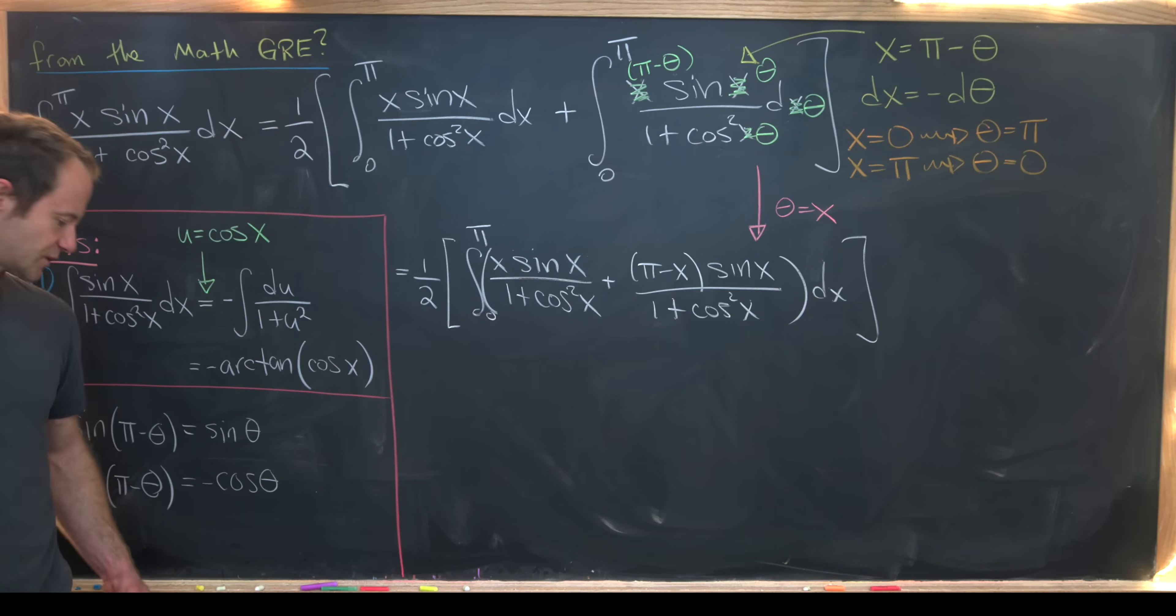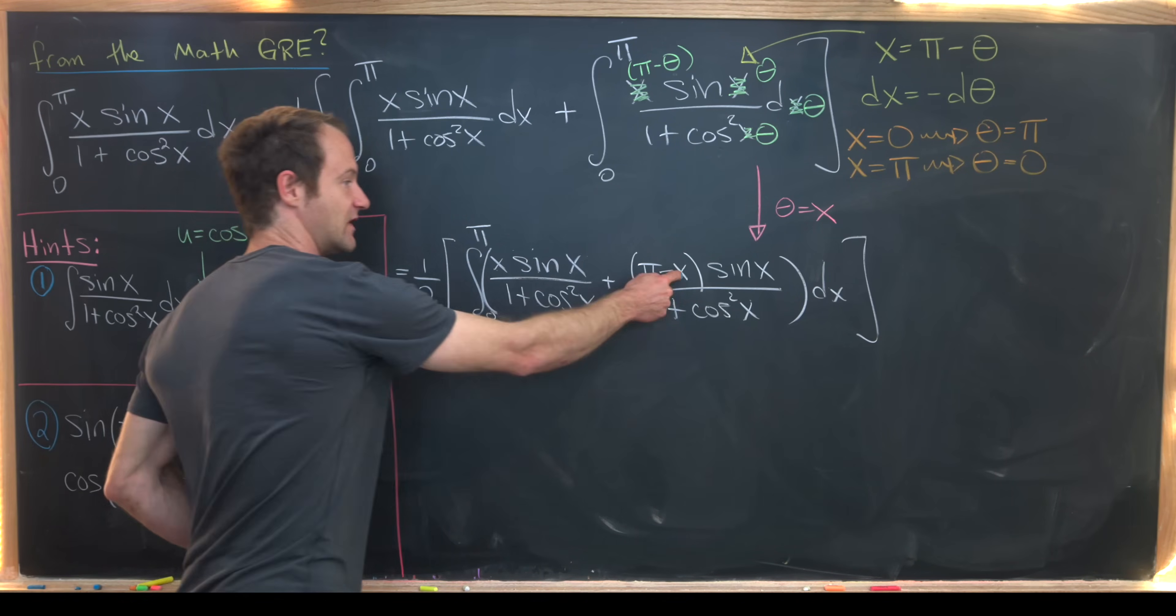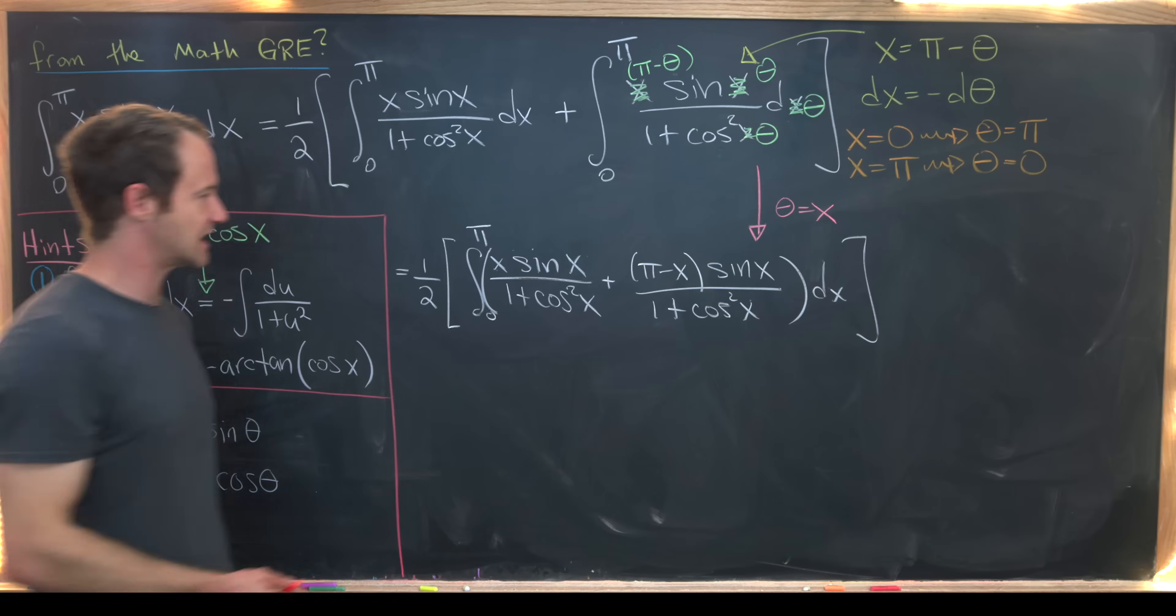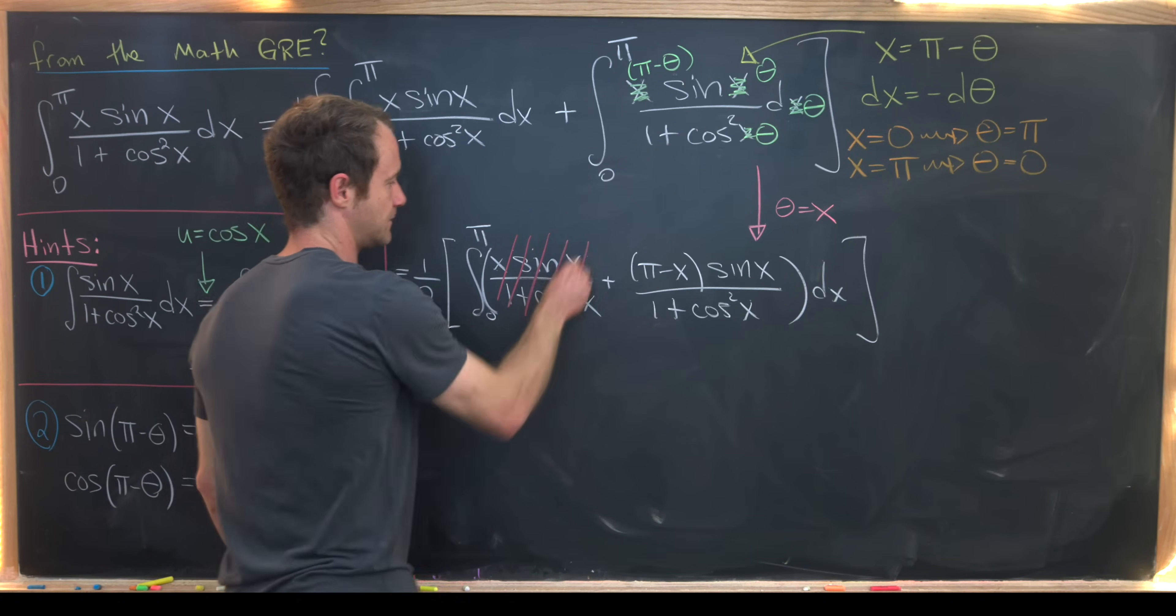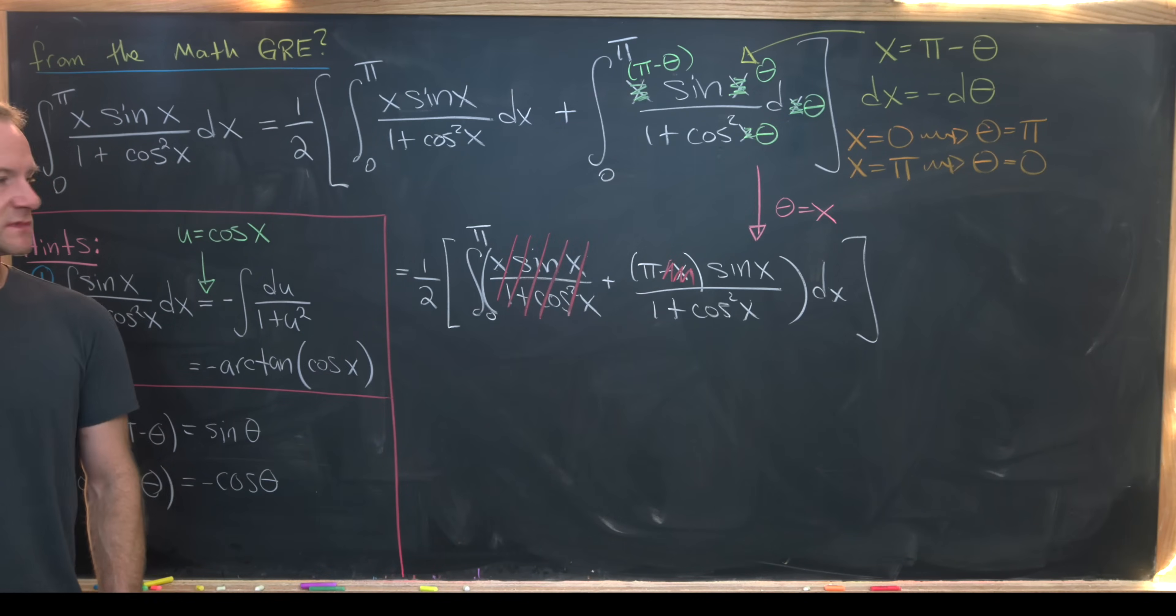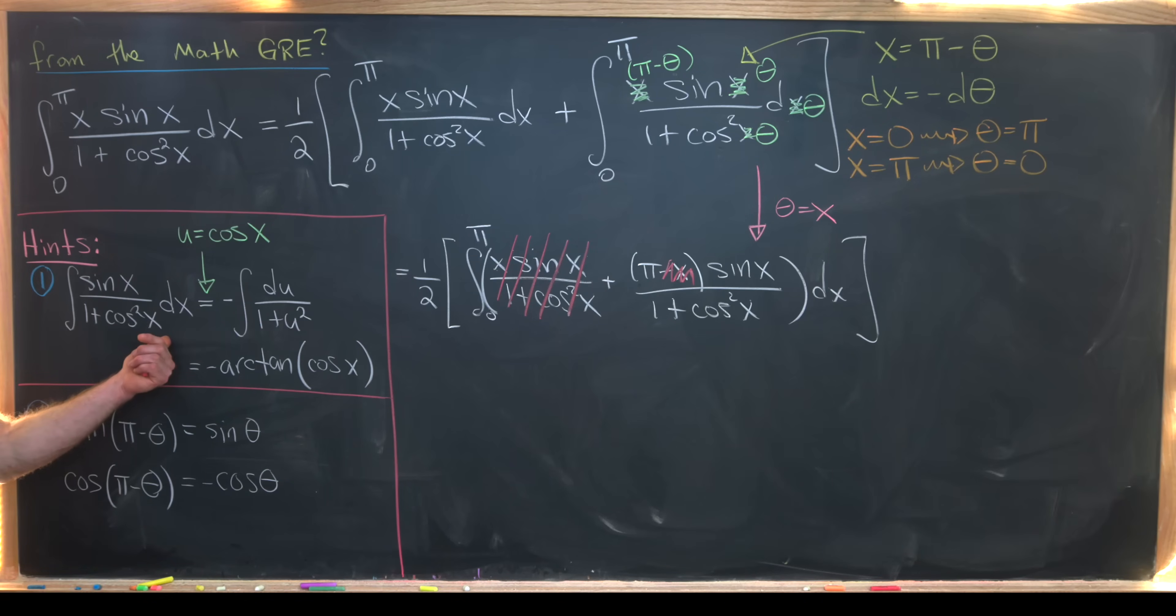Now let's see what sort of simplification can be done. Notice here we have an x sine x. Here we have a negative x sine x. So those are going to, in fact, cancel. This entire thing right here will cancel with this x right here. So that leaves us a pi times sine of x over one plus cosine squared of x. In other words, kind of our dream right here. Let's go ahead and take that pi outside. That will leave us with pi over 2.